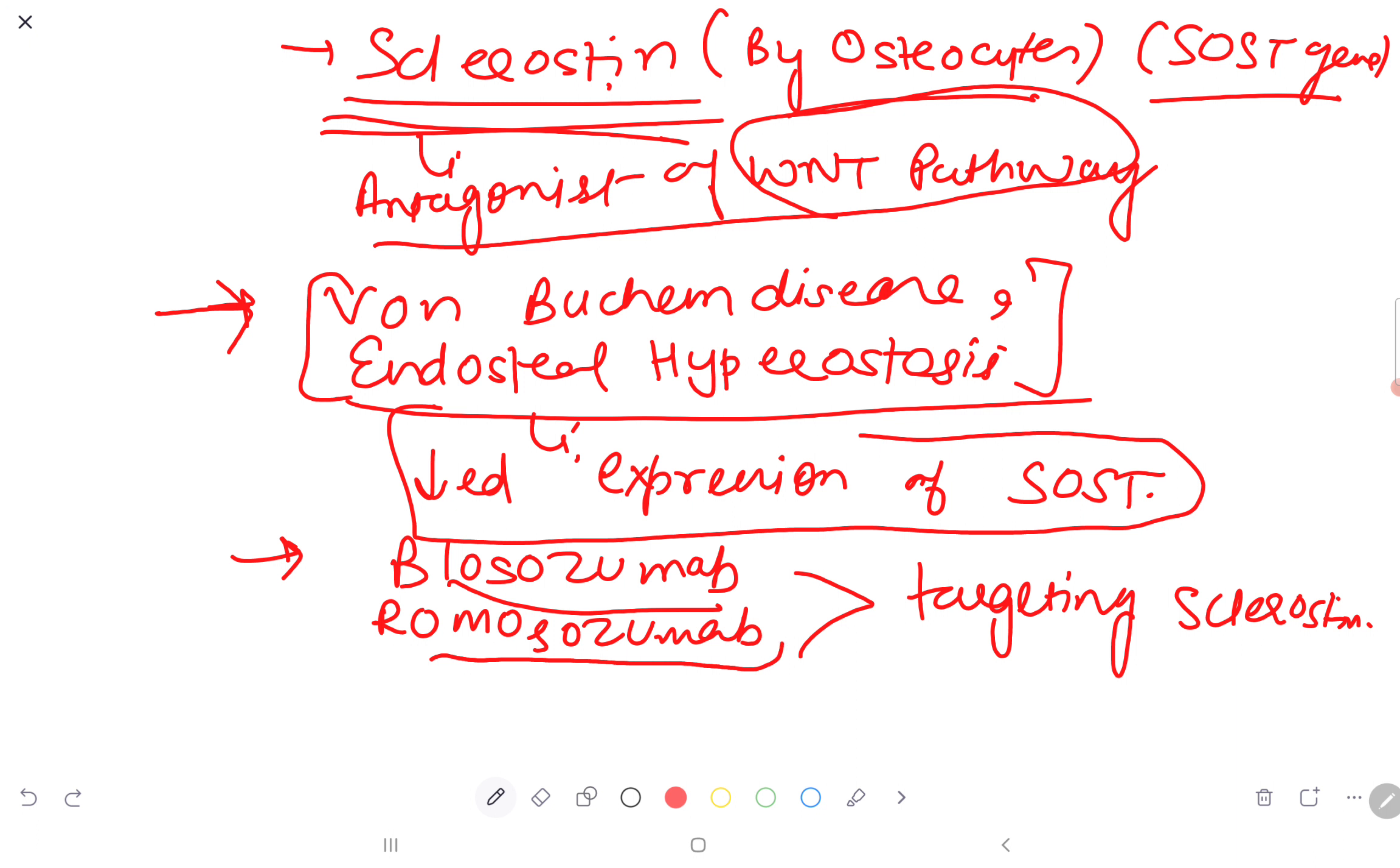Blosozumab and romosozumab can be used for osteoporosis patients, which target sclerostin.